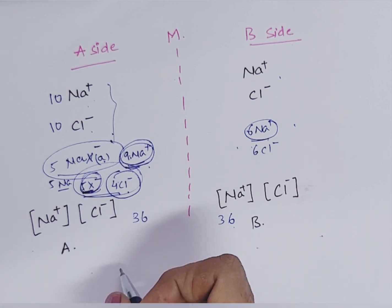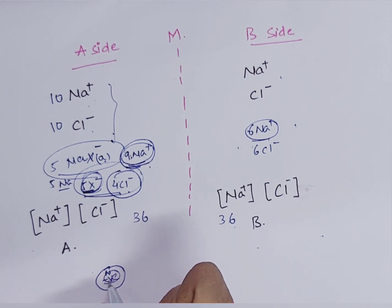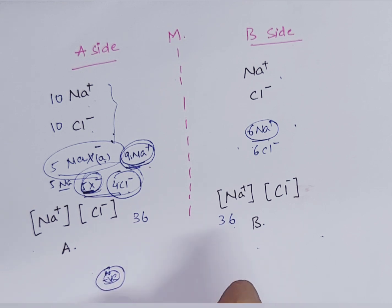The same thing happens in our cell also. In our cell, you can see here, inside the cell, we have proteins which are negatively charged. They cannot come out of the cell. The intracellular fluid contains non-diffusible anions like proteins as well as organic phosphates. And according to this Gibbs-Donnan equilibrium, there is asymmetrical distribution of diffusible ions.